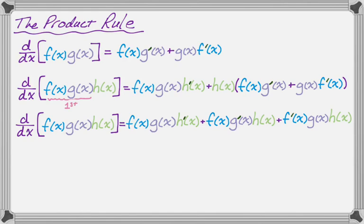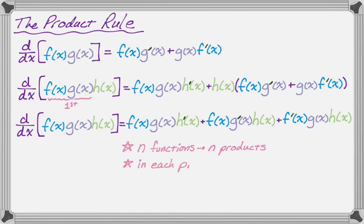If you look at it, we had three functions and we ended up with three products that we're summing up. This is kind of a general truth: with two functions we ended up with two products that we were summing up, and each of the products has one of the derivatives. So in each product we're going to get one of the derivatives. When we have three functions, they each have an f, g, and h, but the prime kind of works its way through the product — it shows up once for each function.